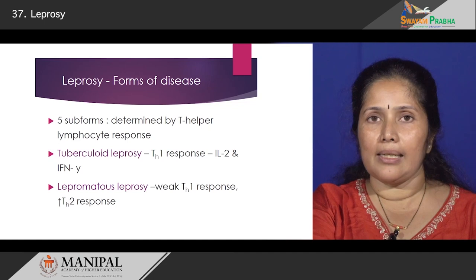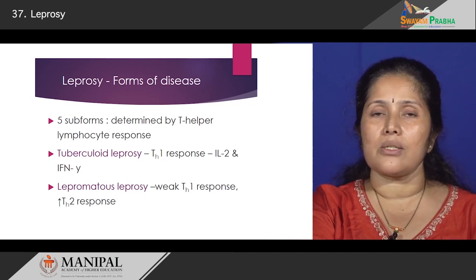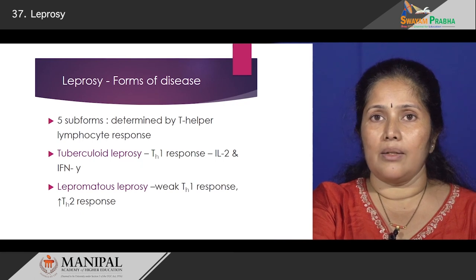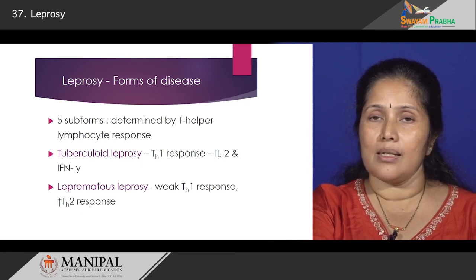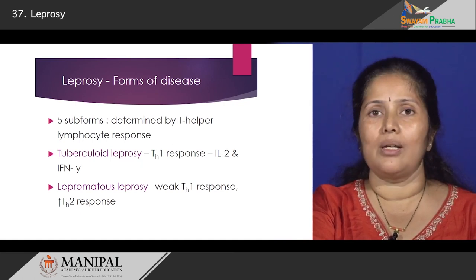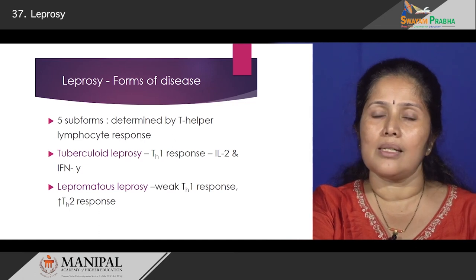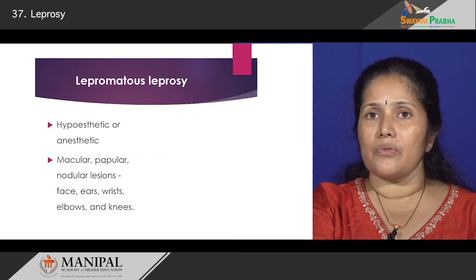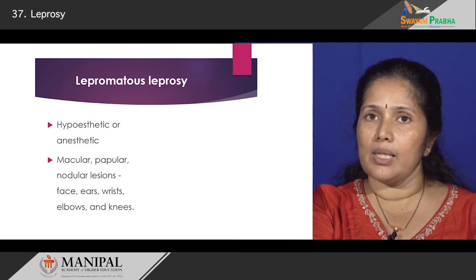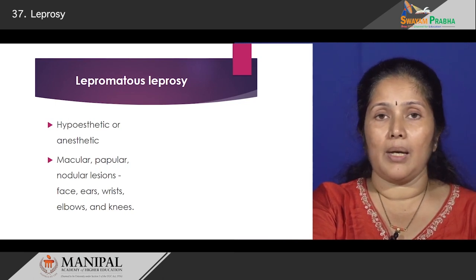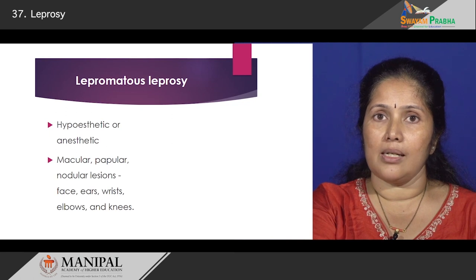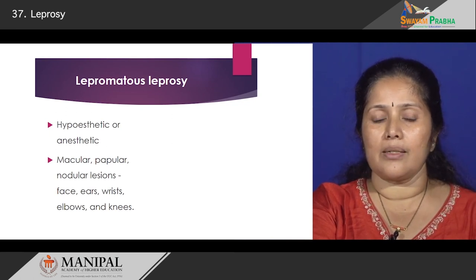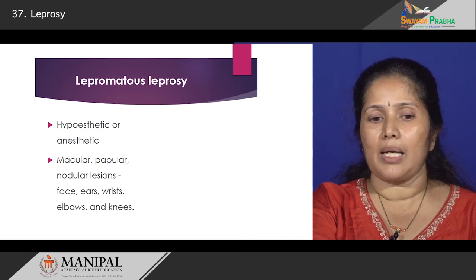We will look at the clinical and morphologic features of both extreme ends: lepromatous leprosy as well as tuberculoid leprosy. First, let us look at lepromatous leprosy. Most of these patients will present with hypo-anaesthetic patches, where the sensations are either low or absent — so either hypo-anaesthetic or totally anaesthetic patches.